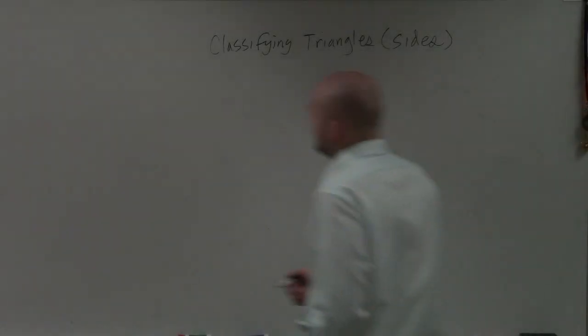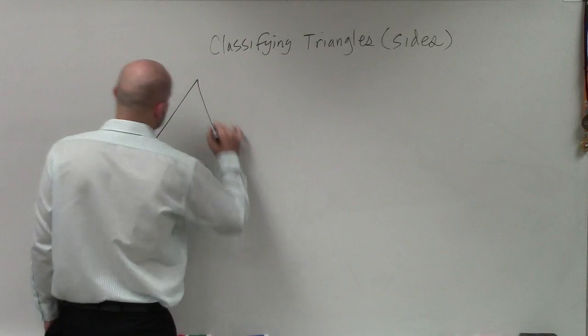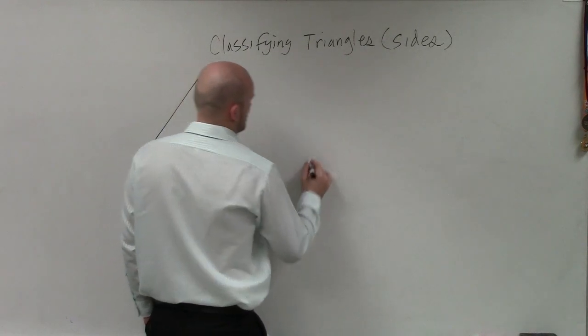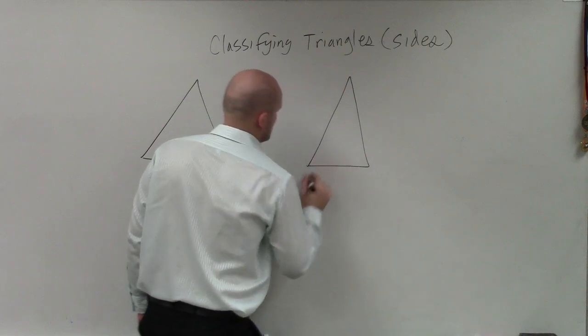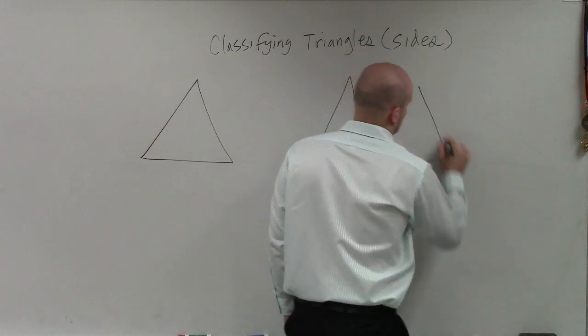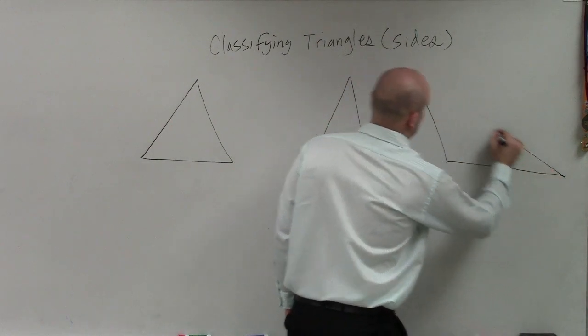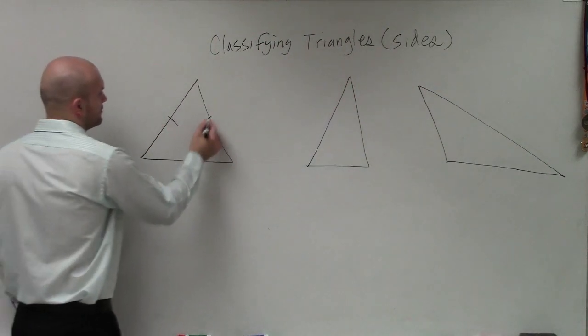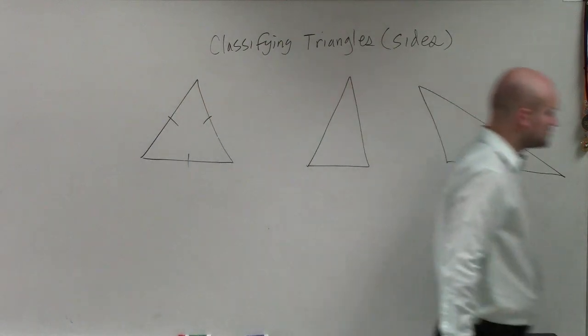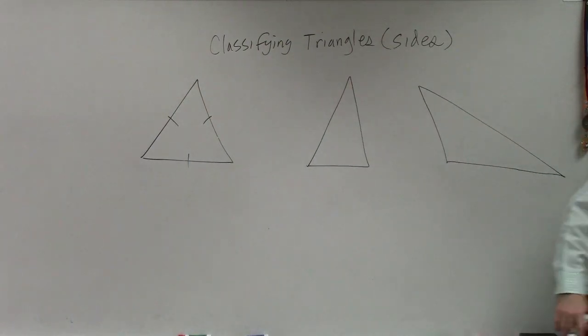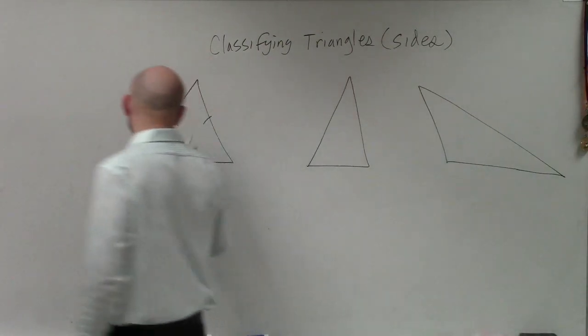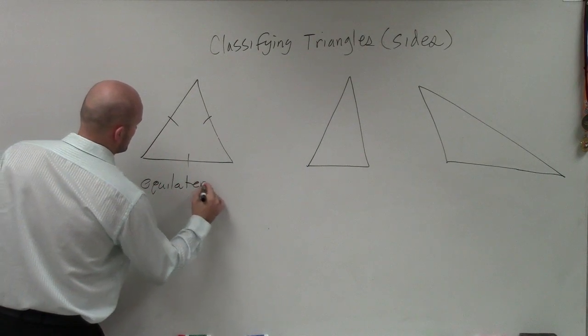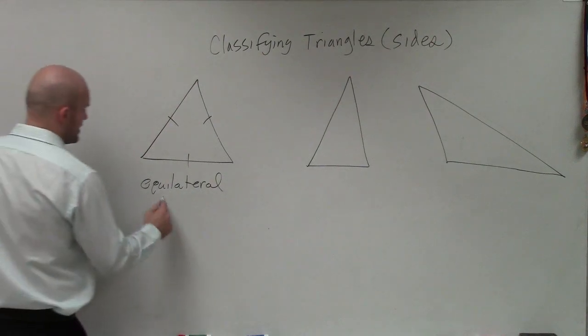There are three ways we can classify a triangle by sides. If we have a triangle that has all equal sides, we call that an equilateral triangle.